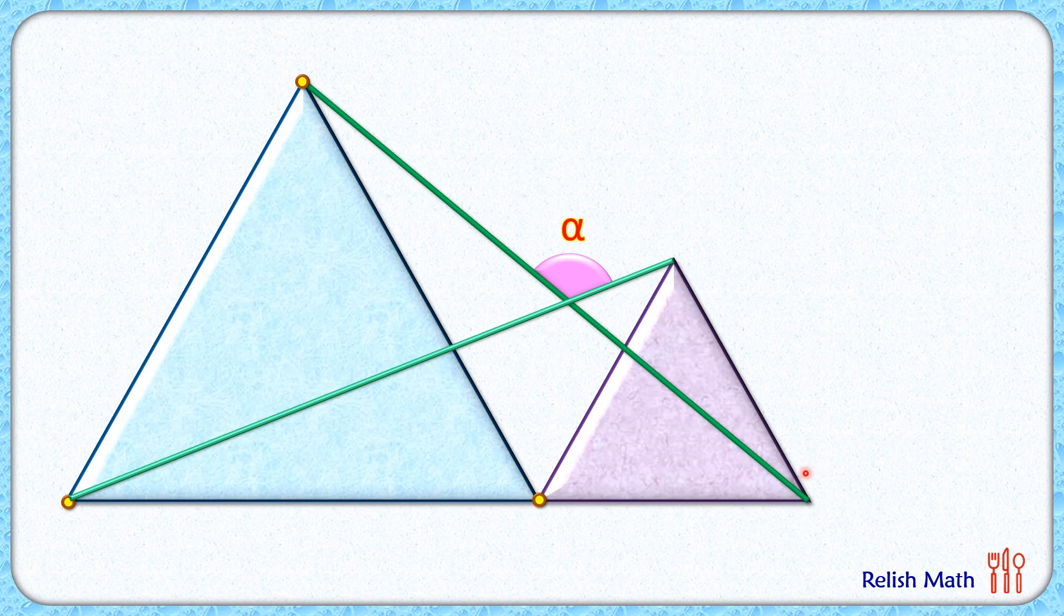So if we reduce this purple triangle, the value of angle alpha should remain the same. To start with, let's extend this green line segment slightly further and now reduce the size of this purple triangle.